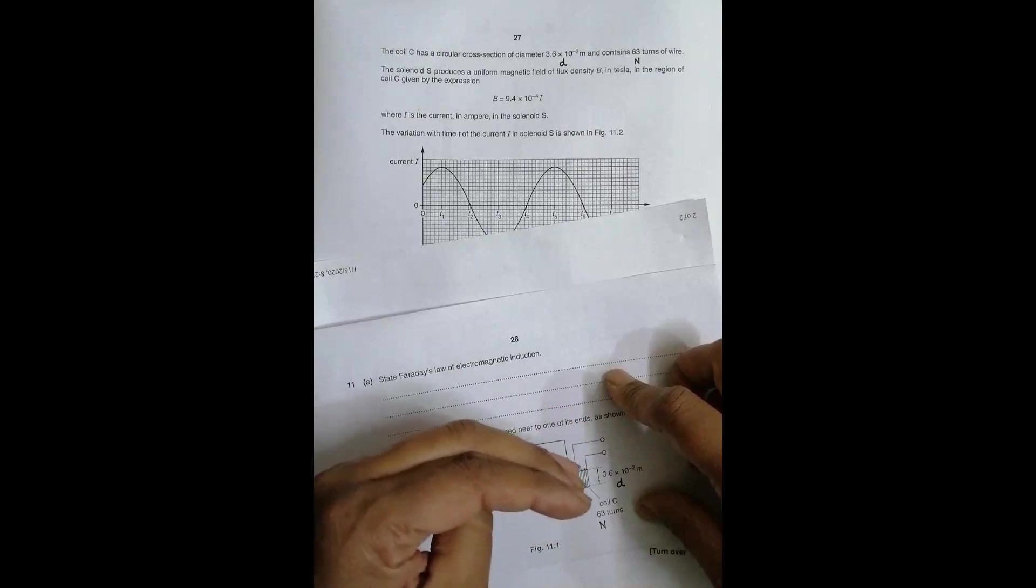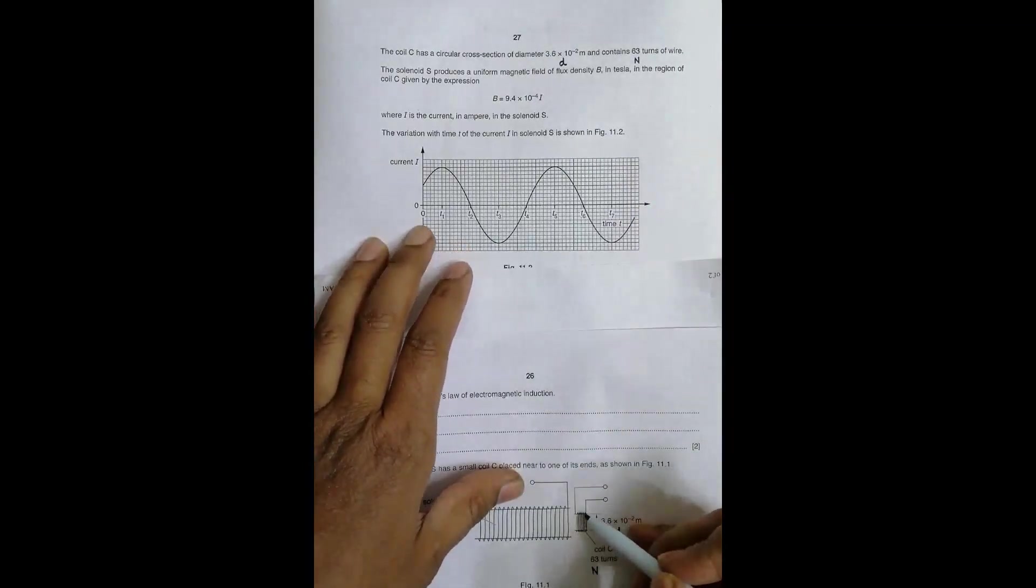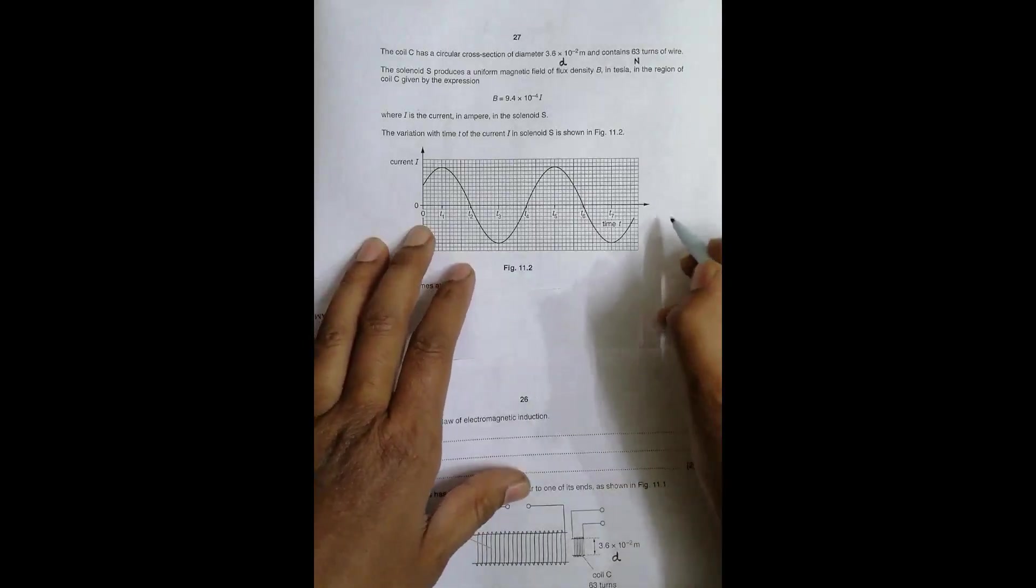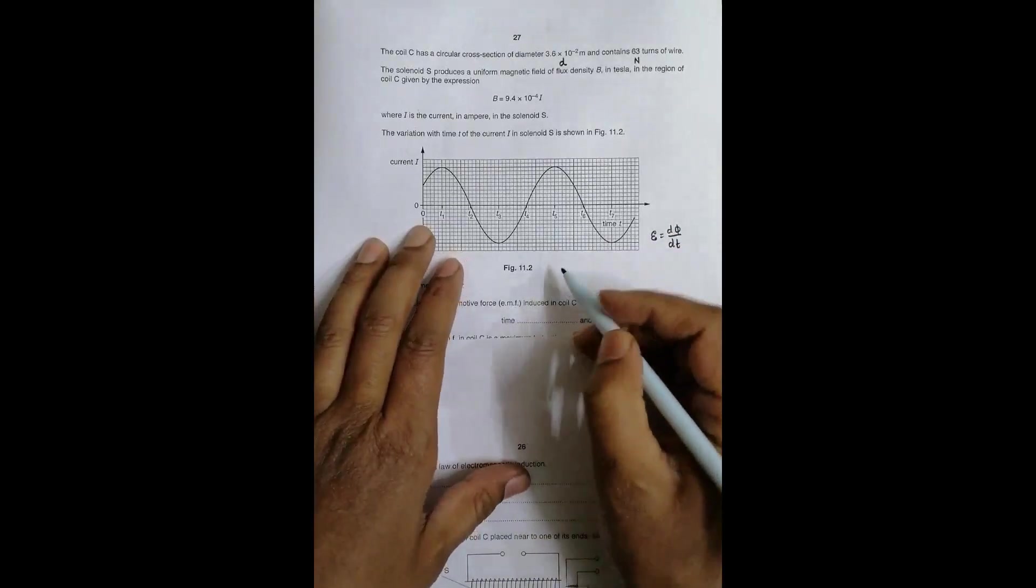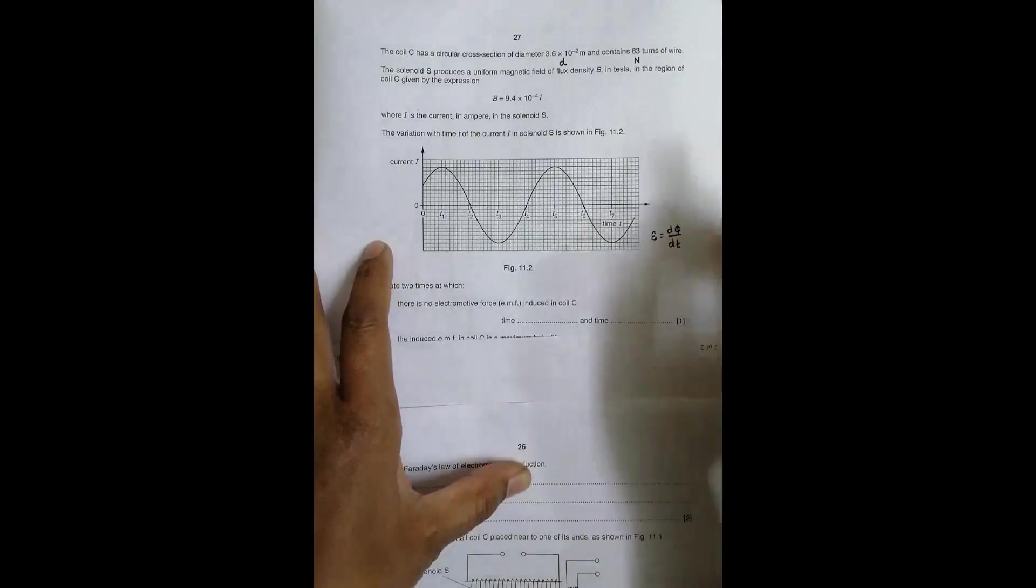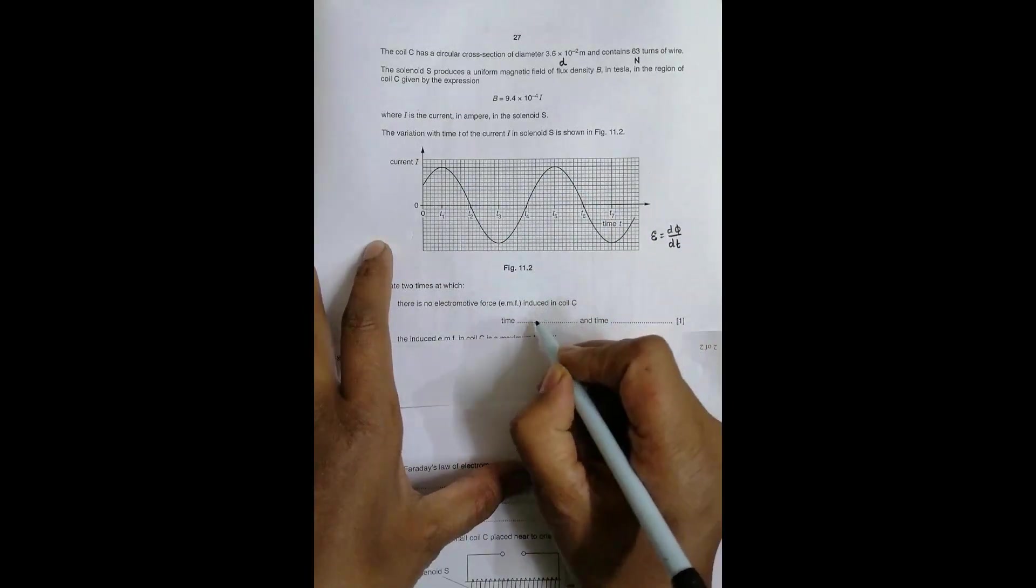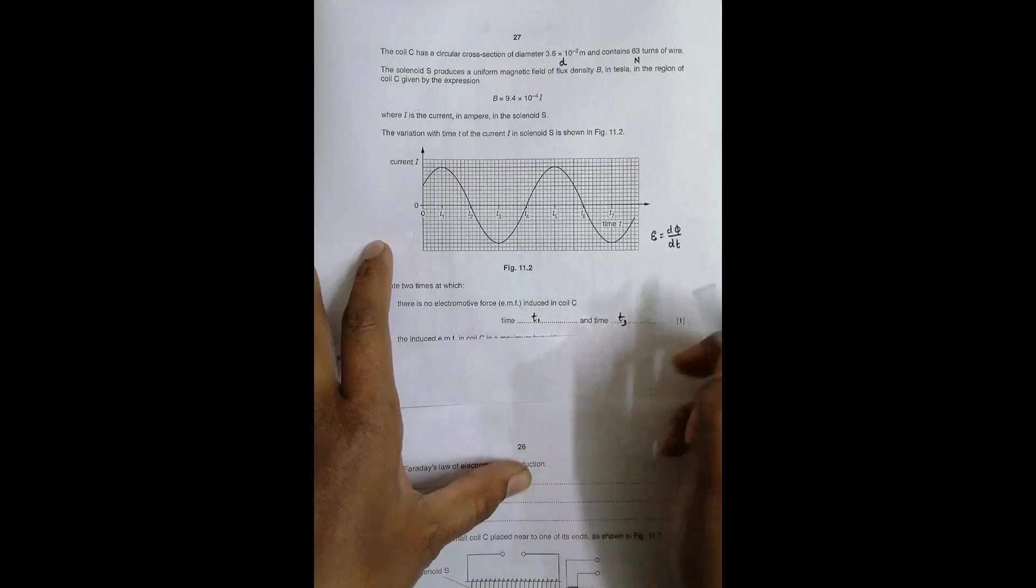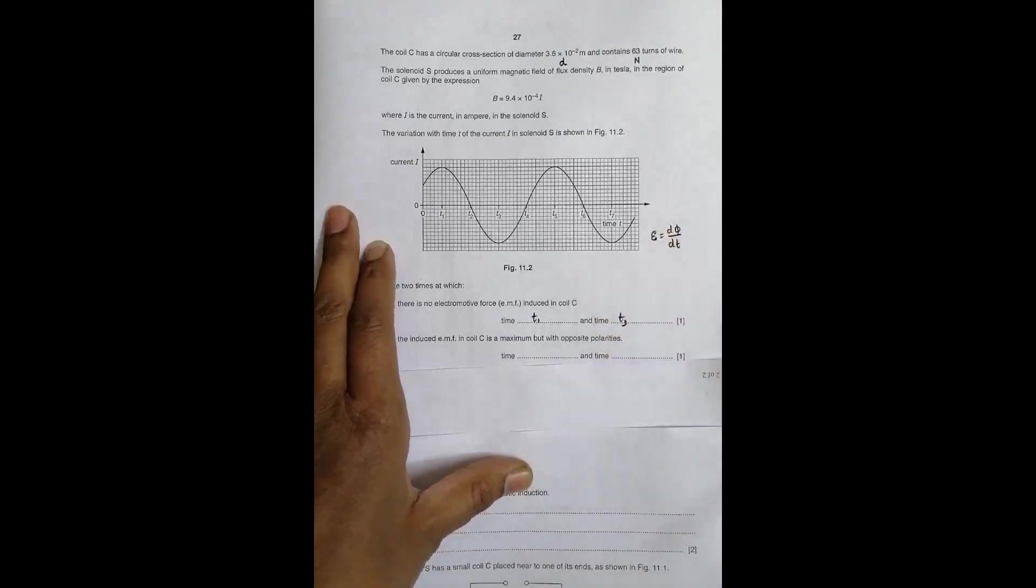When current is constant, even for a moment, there is no cutting or sweeping, the flux is not changing, so EMF should be zero. We have the formula E = dφ/dt. When there is no change of current, EMF will be zero. No change of current means at time t₁, t₃, t₅, and t₇. We have to list two times, so it will be t₁ and t₃.